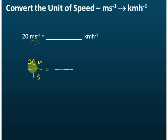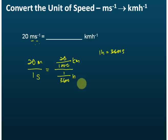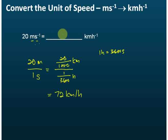We need to convert 20 meters to kilometers, so we divide by 1000. Then we need to convert seconds to hours — we divide seconds by 3600, because one hour equals 3600 seconds. Now we have kilometers in the numerator and hours in the denominator. Using your calculator, you should get the answer 72 kilometers per hour.